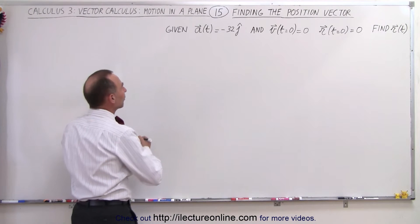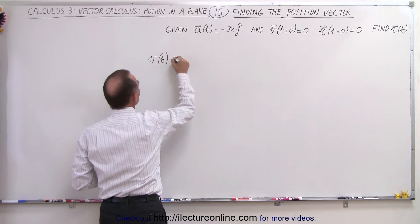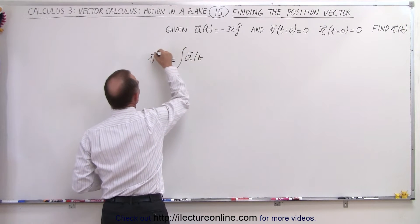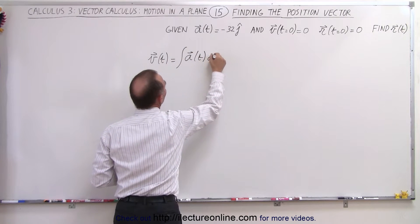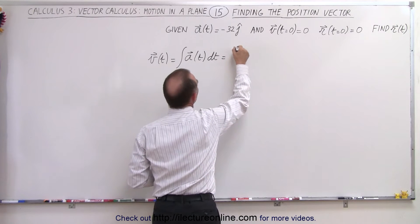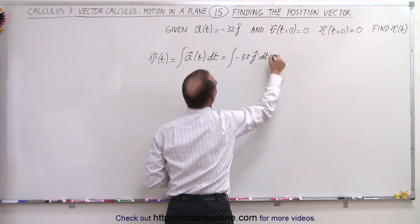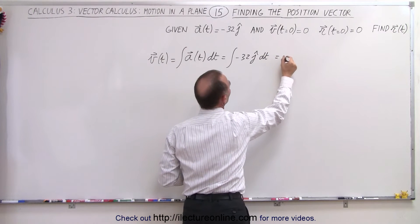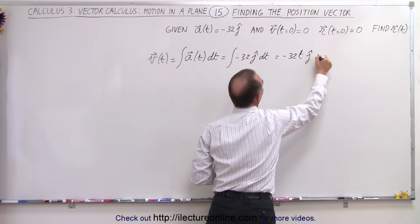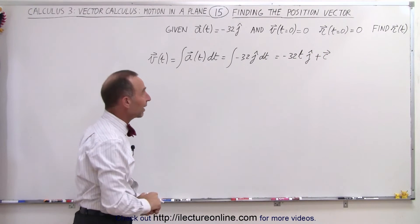First we need to find the velocity vector. By definition the velocity vector is going to be equal to the integral of the acceleration vector times dt, and so that will be equal to the integral of minus 32 in the j direction times dt, which is equal to minus 32t in the j direction plus a constant of integration. Of course that constant will be a vector.